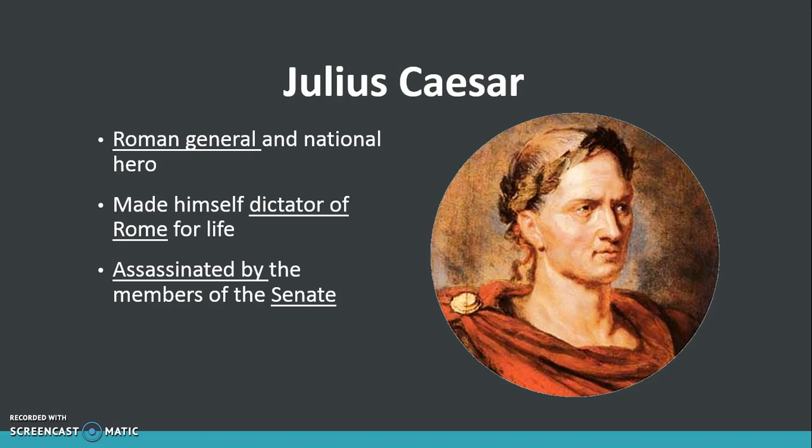First we'll talk about Julius Caesar. Julius Caesar was a Roman general and a national hero who was very beloved by the people of Rome. He ended a civil war in Rome and made himself dictator for life. He was assassinated by members of the Senate because they were jealous of his power and how much he was admired by the people, and also because they were afraid that as dictator he was going to take political power away from them.